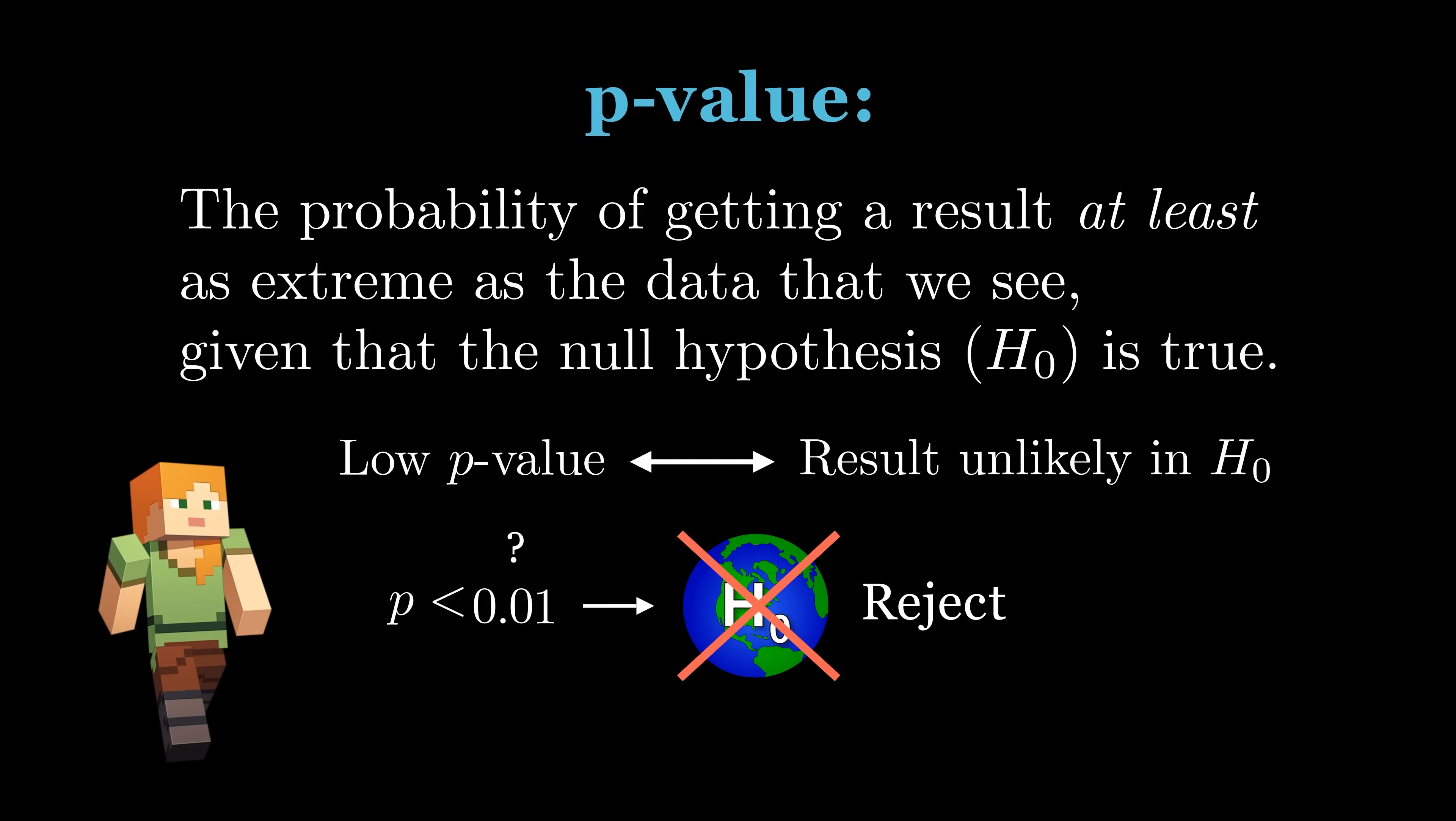There's no objective reason to prefer a 5% threshold over a 1% threshold, so this 5% convention is somewhat arbitrary.